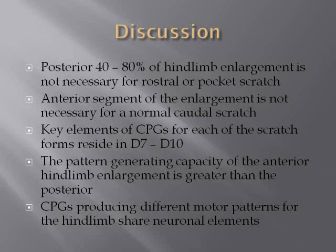On a slightly broader scale, it was found that the posterior 40% to 80% of the hind limb enlargement was not necessary for the rostral or pocket scratch reflexes. Similarly, the anterior segment of the enlargement was not necessary for a normal caudal scratch reflex. Despite these differences, the key elements of the central pattern generators for each of the scratch reflexes reside in the D7 through D10 spinal segments. Overall, the pattern generating capacity of the anterior hind limb enlargement was greater than the posterior — a result supported by findings in other animal models such as the cat. The observations from this study support the hypothesis that central pattern generators producing different motor patterns for the hind limb share neuronal elements.